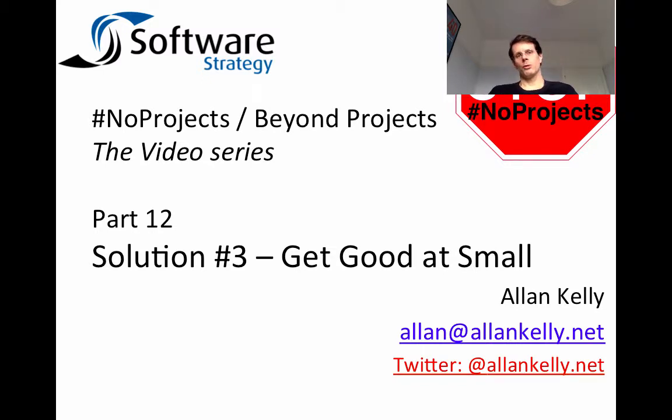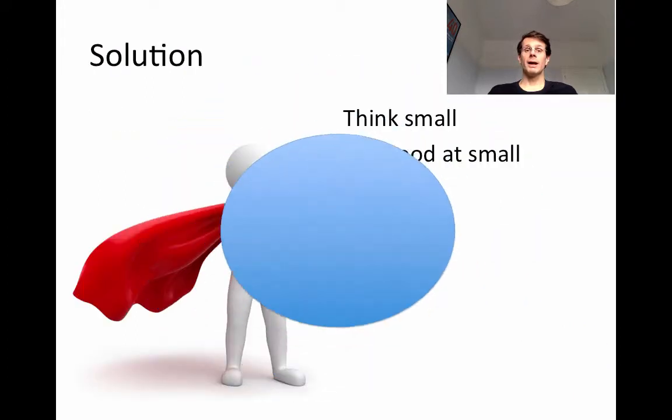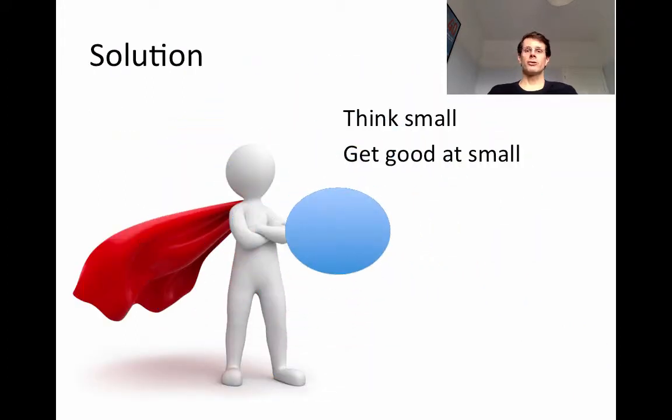This is Part 12 of the No Projects Mini Series: Get Good at Small. We've been talking about how the project model is optimized for big, and working in the big creates problems around value and risk. The solution is to get good at small and optimize ourselves for working in the small. Think small, get good at doing things in the small.